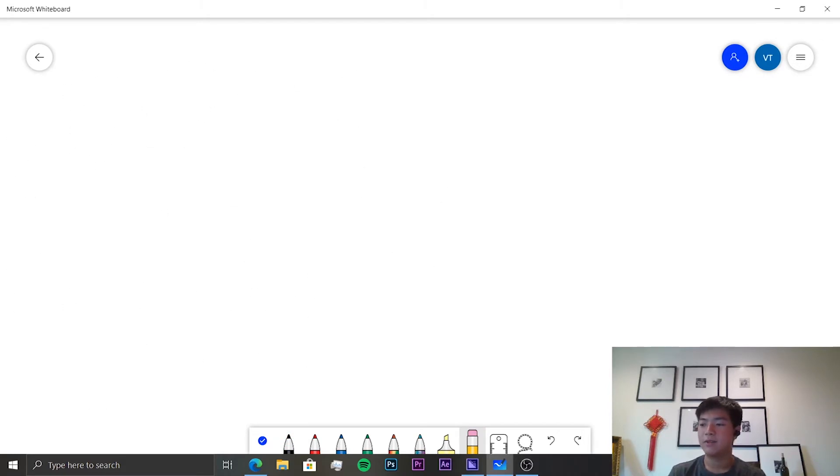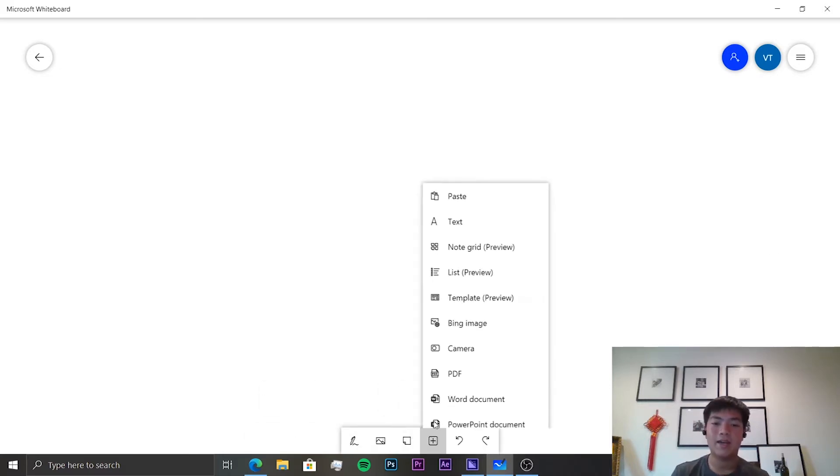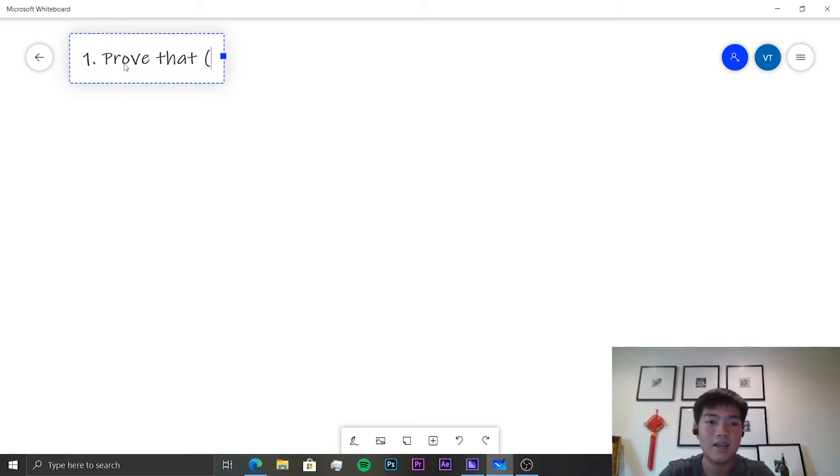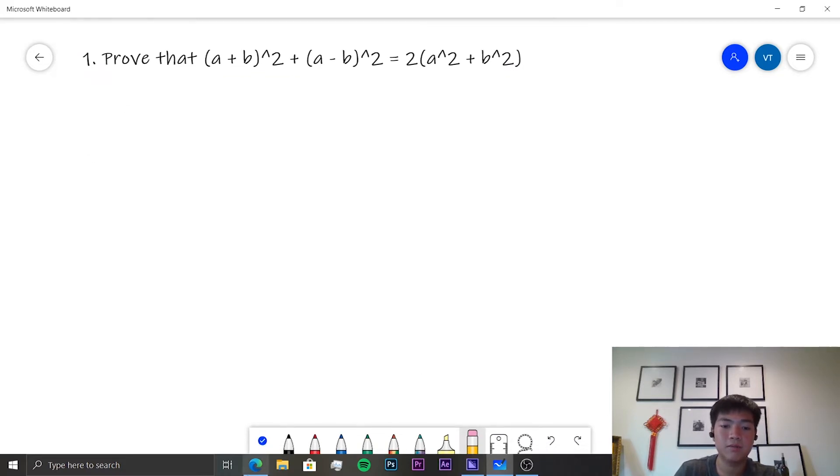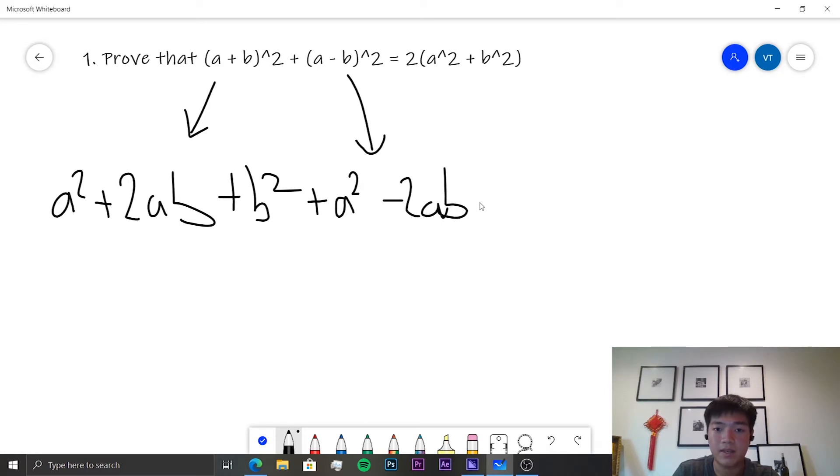I'm going to be going through the exercise, doing every other question like usual, and this should be a pretty fast speedrun. So let's start with the odd ones today. We want to prove that (a+b)² + (a-b)² is equal to 2(a² + b²). This is a pretty straightforward proof. We know that (a+b)² is equal to a² + 2ab + b². And we also know that (a-b)² is equal to a² - 2ab + b².